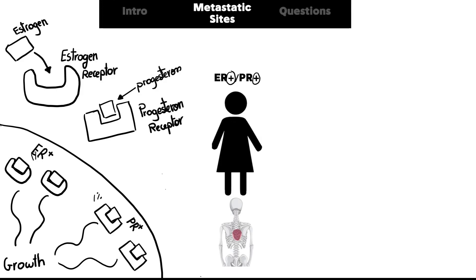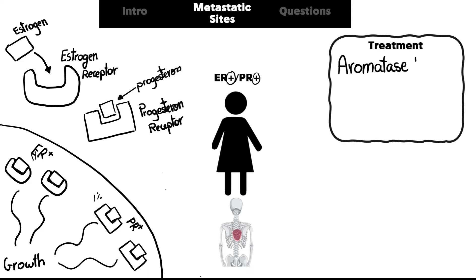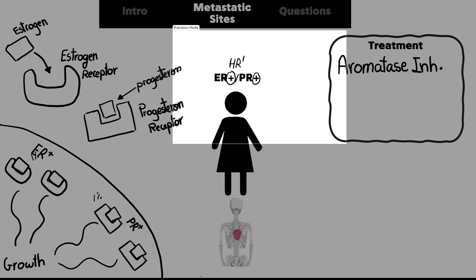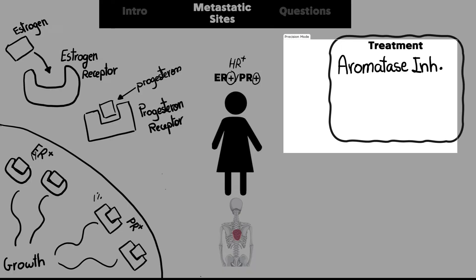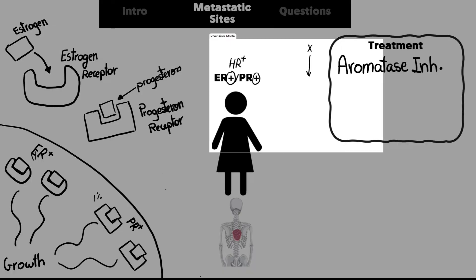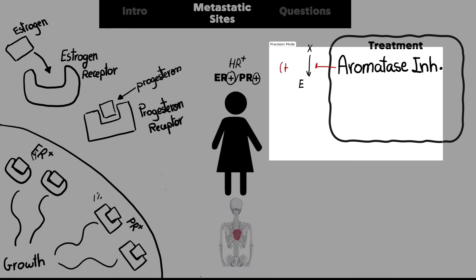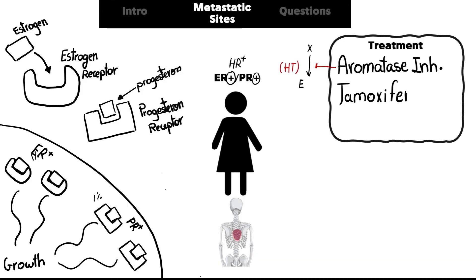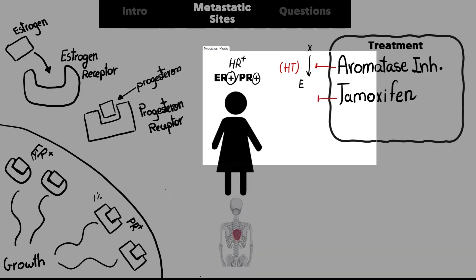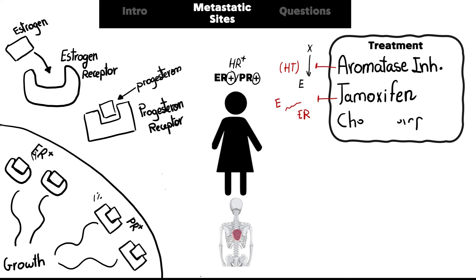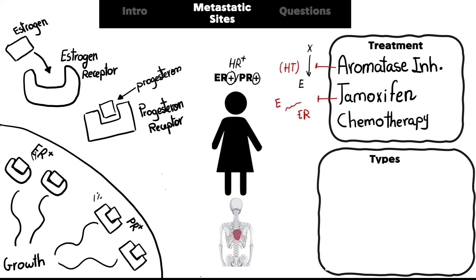The same case applies for PR. Regarding metastasis, the most frequent sites are the bones. Treatments for hormone receptor positive (ER/PR positive) cells include: first, aromatase inhibitors, which block the formation of estrogen — also called hormonal therapy (HT); second, tamoxifen, another hormonal therapy that blocks the binding between estrogen and the estrogen receptor; and third, chemotherapy.